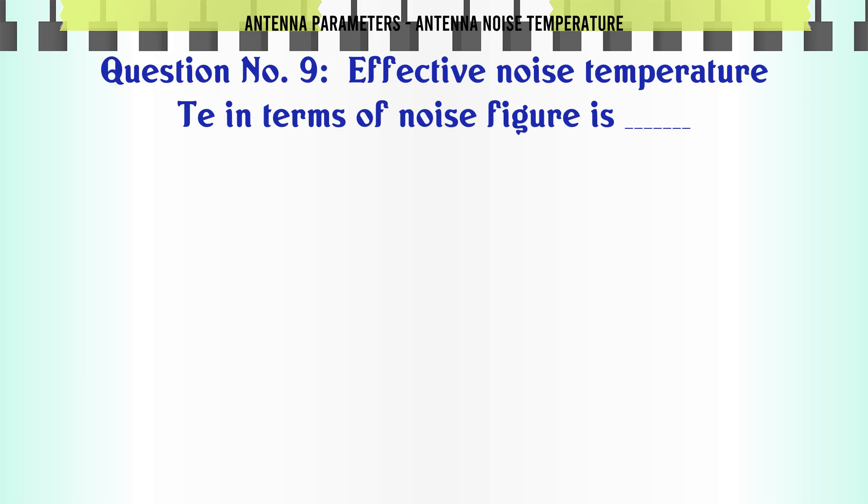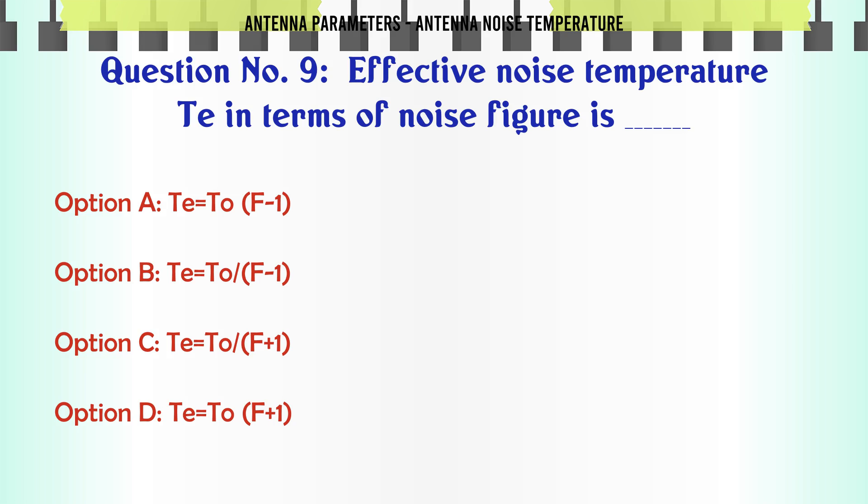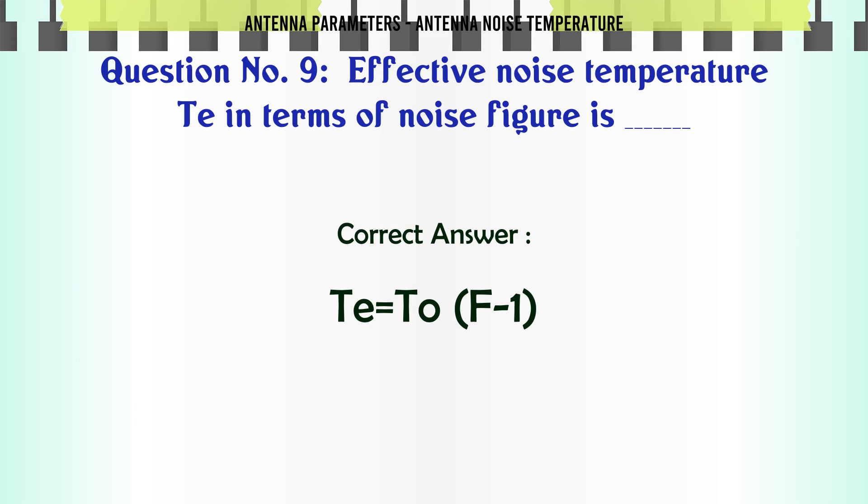Effective noise temperature T_E in terms of noise figure is: Option A: T_E equals T_0 times open paren F minus 1 close paren. Option B: T_E equals T_0 times open paren F plus 1 close paren. Option C: T_E equals T_0 times open paren 1 minus F close paren. Option D: T_E equals T_0 times open paren 1 plus F close paren. The correct answer is T_E equals T_0 times open paren F minus 1 close paren.